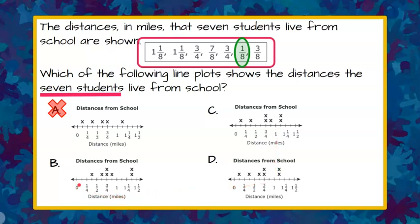But one-eighth is the smallest piece of data and if I look at each one of these line plots each of the number lines is the same and we can see that there's one, two, three, four, five, six, seven, eight intervals. So each one of these little tally or tick marks represents one-eighth.